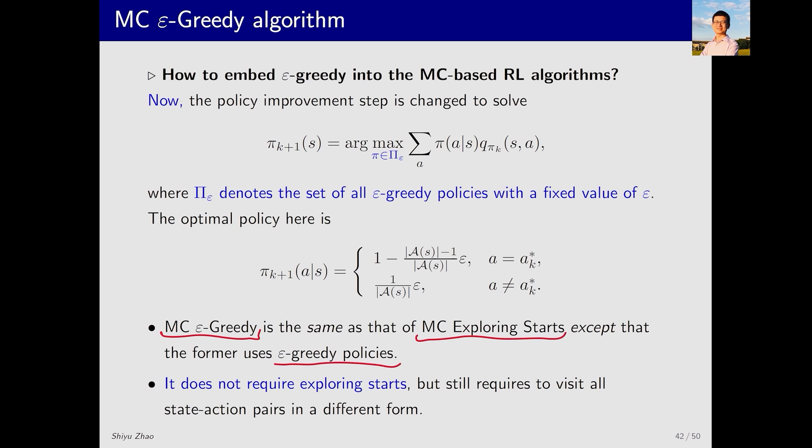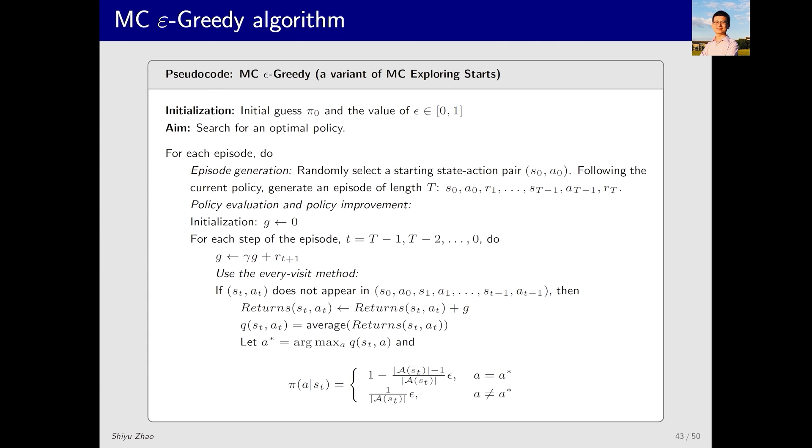Why do we introduce this policy? Because it does not require the condition of exploring starts. Below is the pseudocode for MC epsilon greedy, which is the same as the pseudocode for MC exploring starts, except for here the use of epsilon greedy policy. Another minor difference is that here we use every visit instead of first visit. Why every visit? Because in very long episodes, if we only use first visit, many state-action pairs may be visited multiple times, resulting in some wastage of samples. Therefore, we use every visit.